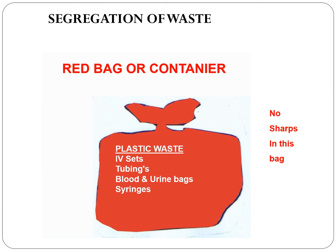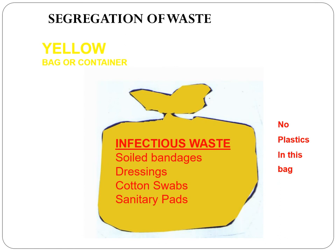It is very important to know how to do proper segregation of waste as per the color coding. The red bag or container is for plastic waste — that can be IV sets, tubings, blood and urine bags, as well as syringes. No sharps are to be segregated in red bags. The yellow color bag or container is for soiled bandages, dressings, cotton swabs, as well as sanitary pads. No plastics are to be segregated in yellow color bags.